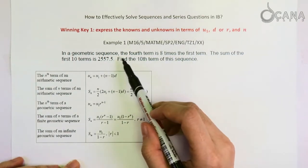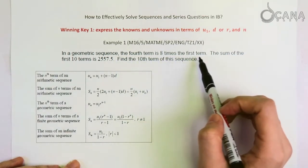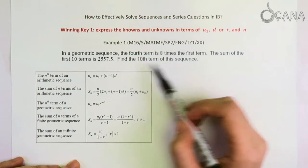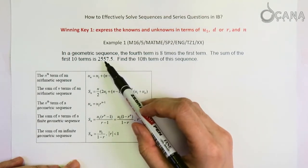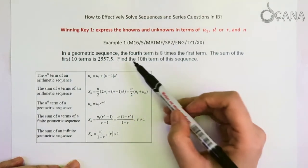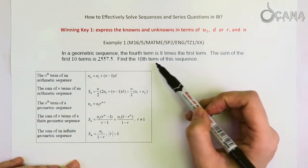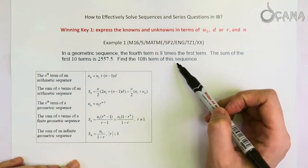In a geometric sequence, the fourth term is eight times the first term, and the sum of the first ten terms is 2,557.5. The question asked for the tenth term in this sequence.